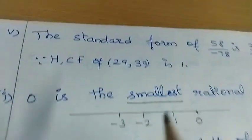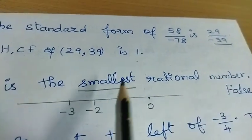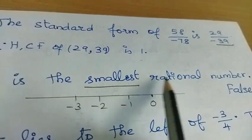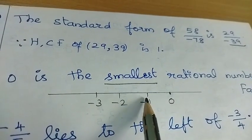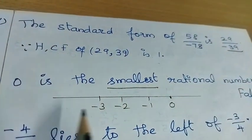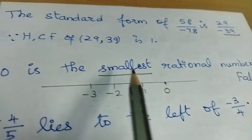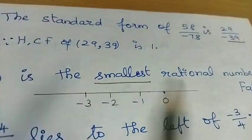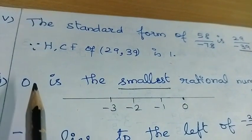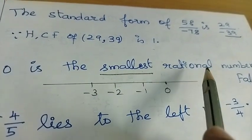Second one — True or False. First one: Zero is the smallest rational number — True or False? Zero is not the smallest rational number because there are so many rational numbers smaller than zero. So the answer is False.